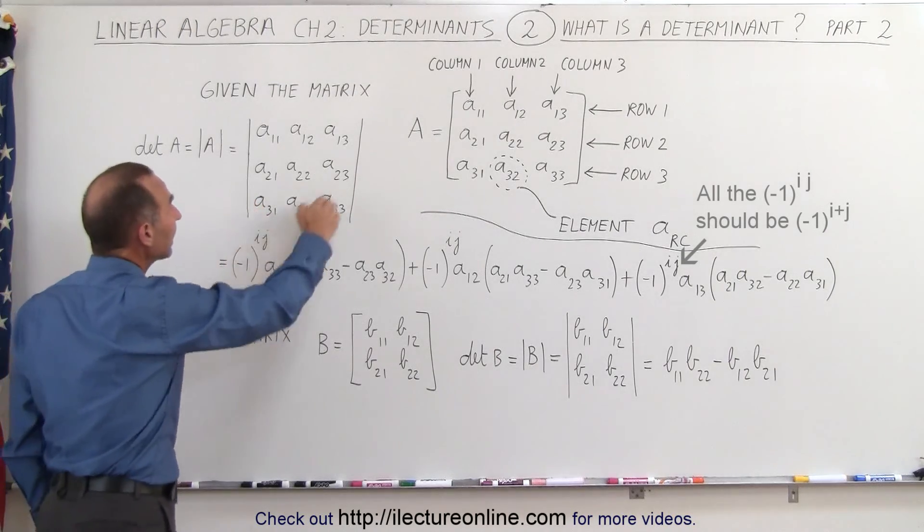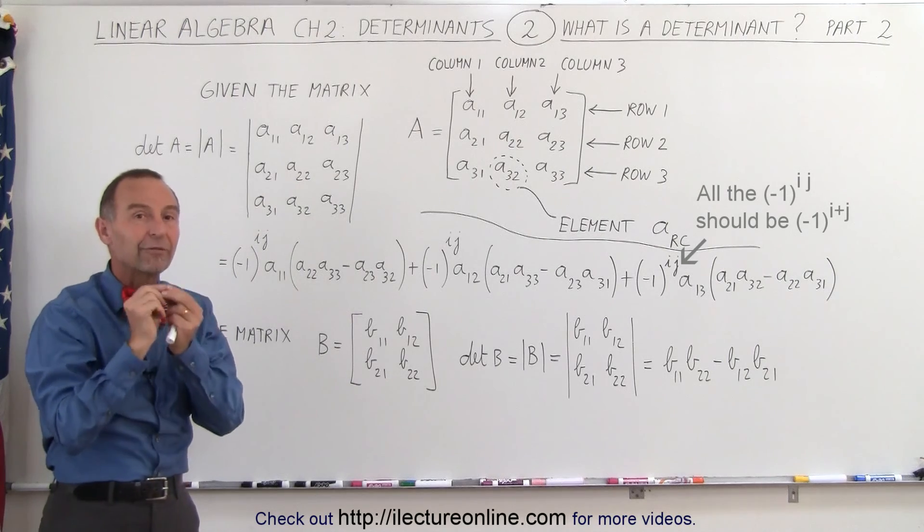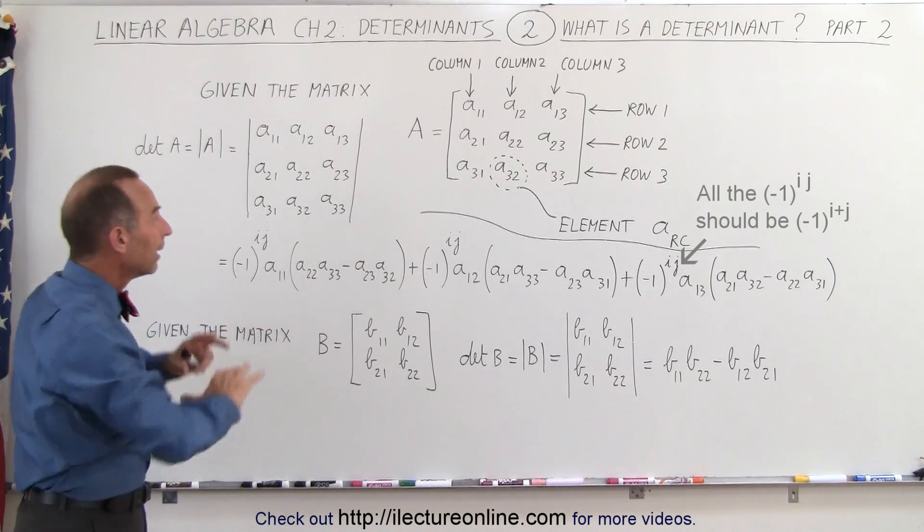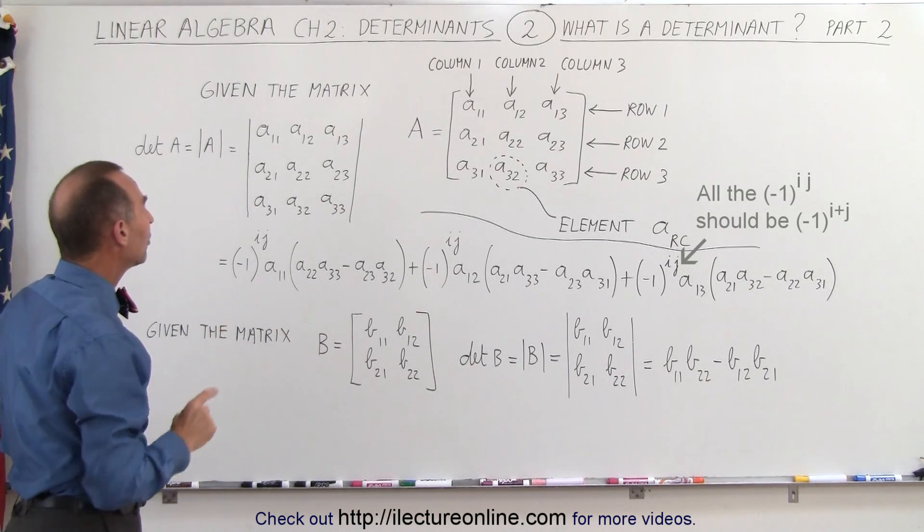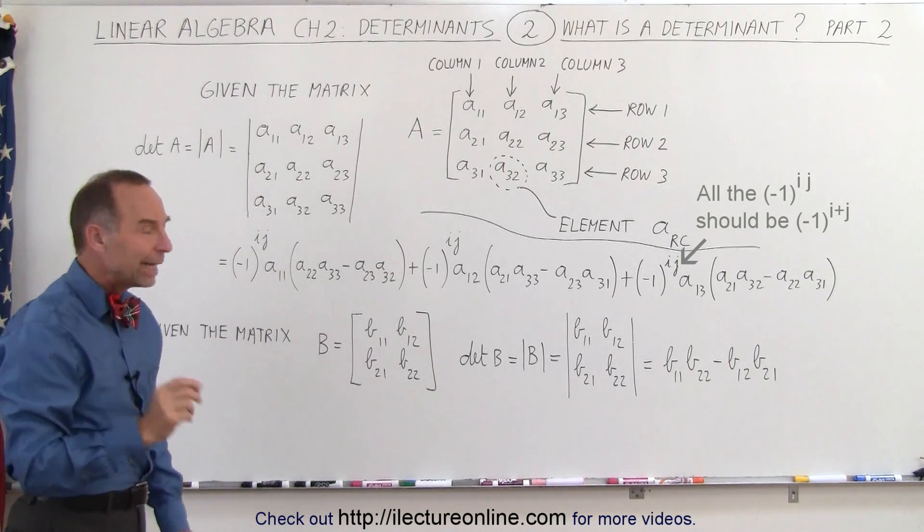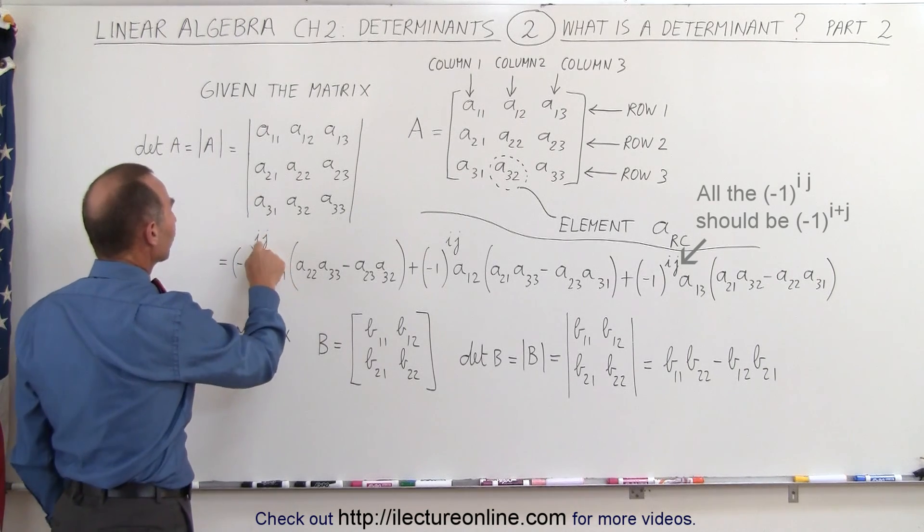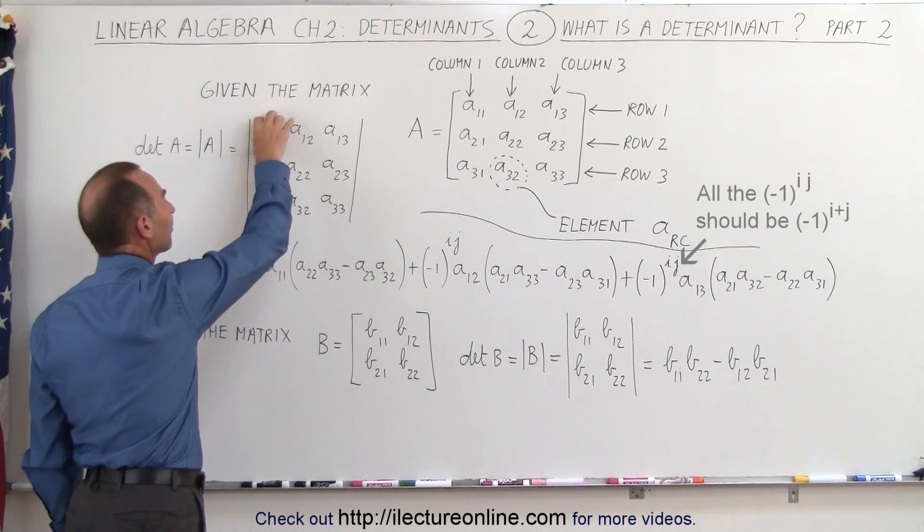And the way you calculate the determinant, remember, you're supposed to come up with a single value number, a single number that indicates what the determinant is of that matrix. And the way it's done is you take negative 1 raised to the IJ power. Now again, I and J stands for the row and the column of the first upper left element.